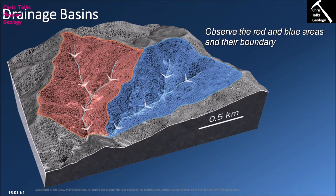A river is defined as a body of running water confined to a channel. The water will run downhill, typically going from a point of high elevation to a point of low elevation, so gravity is helping to influence that flow. We can see that in this diagram, where the source of the river is up in the elevated terrain and it moves downhill into the lower terrain area.